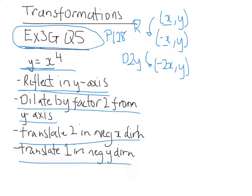And then we've got to translate 2 in the negative x direction, so negative 2 x direction, that would mean minus 2x and would take away another 2 from the x value.